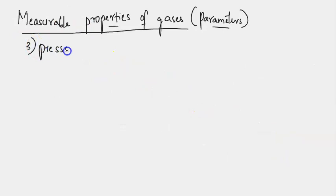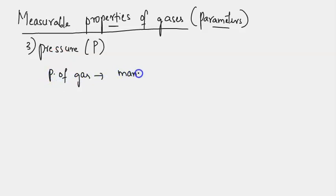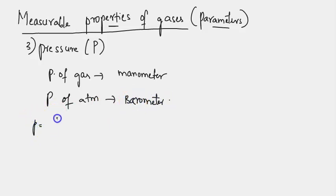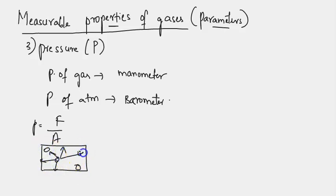The third and most important parameter for gases is pressure, represented by the symbol P. Pressure of a gas is measured by a manometer, while atmospheric pressure above sea level is measured by a barometer. Pressure is force per unit area. Gas particles moving randomly hit the walls of a closed container or collide with each other, exerting pressure on the walls per unit area. The pressure exerted by the gas on the liquid column in the manometer measures the gas pressure, equal to h × d × g.